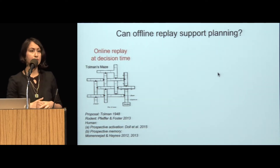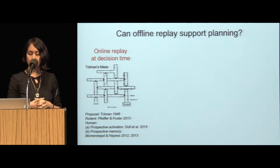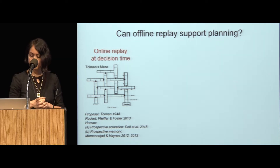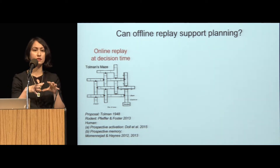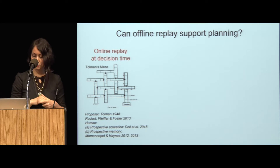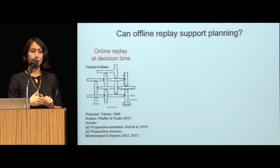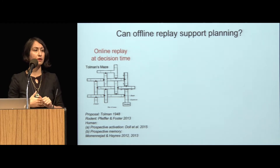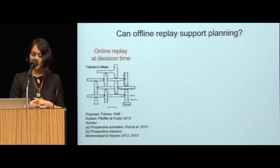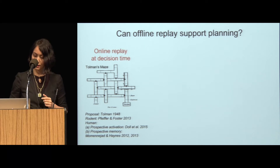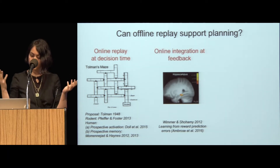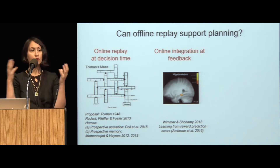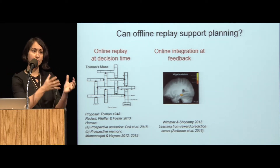Just to zoom back a little bit to what the literature says about the role of replay: Tolman famously proposed that at the moment of decision, we roll out all of the trajectories in a decision tree and then choose the one that is optimal for reward. We have some evidence of this from a number of incredible labs recently, especially the Foster Lab. And there is evidence from humans, from fMRI, from the DAW Lab. Brad Dahl did this wonderful experiment showing prospective activations in a two-step task, and we have shown some evidence for prospective memory. There is also beautiful work by Elliot Wimmer and Daphna Shahami showing that you would do online integration of associated memories at the moment where you're receiving feedback.